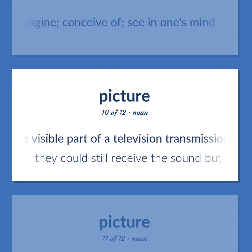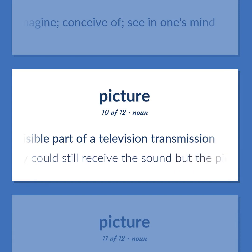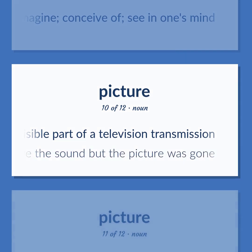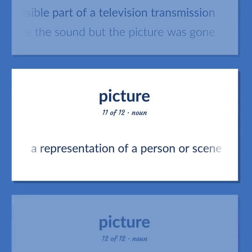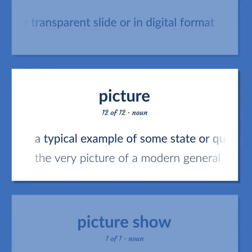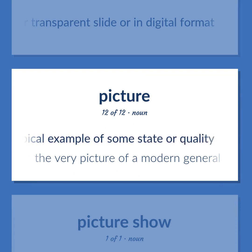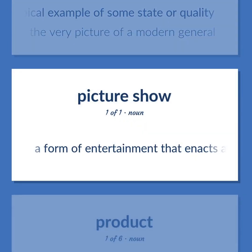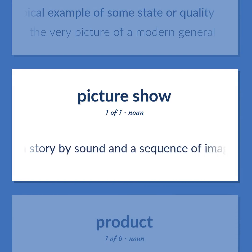Picture (noun): The visible part of a television transmission. Example: They could still receive the sound but the picture was gone. Also, a representation of a person or scene in the form of a print or transparent slide or in digital format. Also, a typical example of some state or quality. Example: The very picture of a modern general.